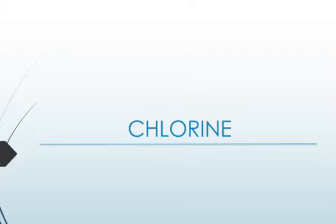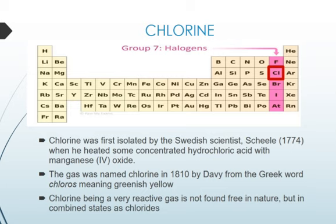Welcome back friends. As we continue studying about halogens and their compounds, in the previous lecture we studied about fluorine. But in this lecture we'll be studying about chlorine. We learned that the halogens are the group seven elements: fluorine, chlorine, bromine, iodine, and astatine. Today we'll be looking at chlorine.